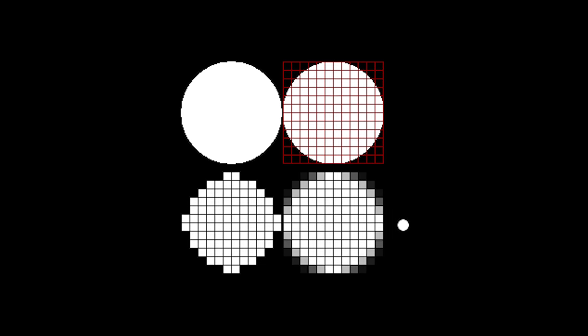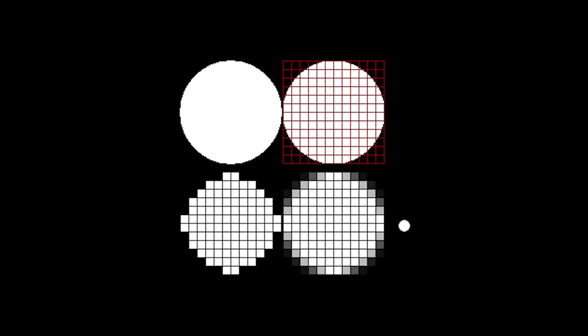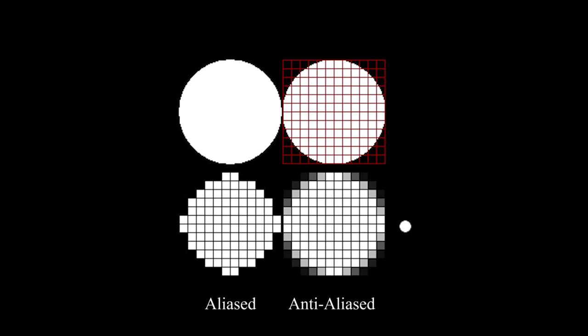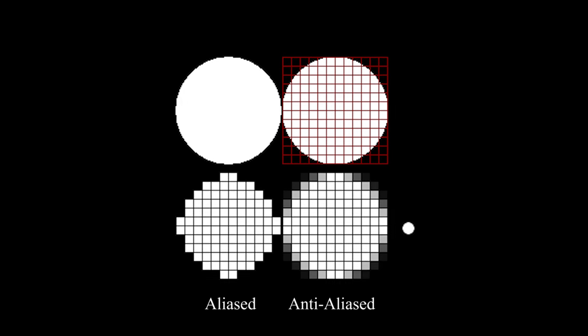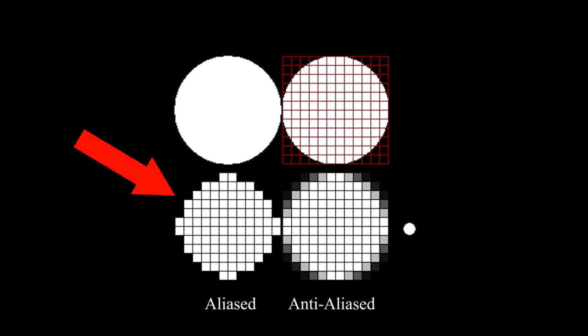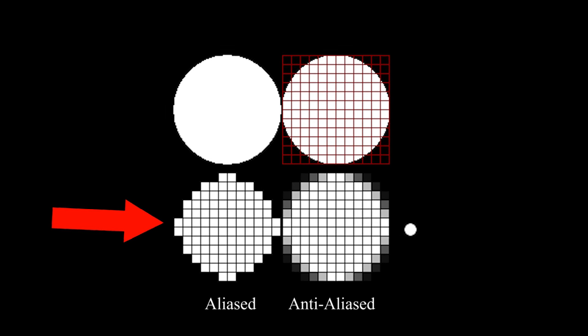For those of you who do not know, in video graphics, anti-aliasing is any number of methods by which curved and slanted edges are smoothed via the process of pixel blending. For example, since pixels are rectangular in shape, curved surfaces on screen cannot accurately be rendered. This explains the jaggies seen around wheels, plants.